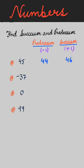Now the predecessor of minus 37 is minus 37 minus 1, that is minus 38. The successor of minus 37 is minus 37 plus 1, that is minus 36. Note that minus 36 is greater than both of these negative numbers.